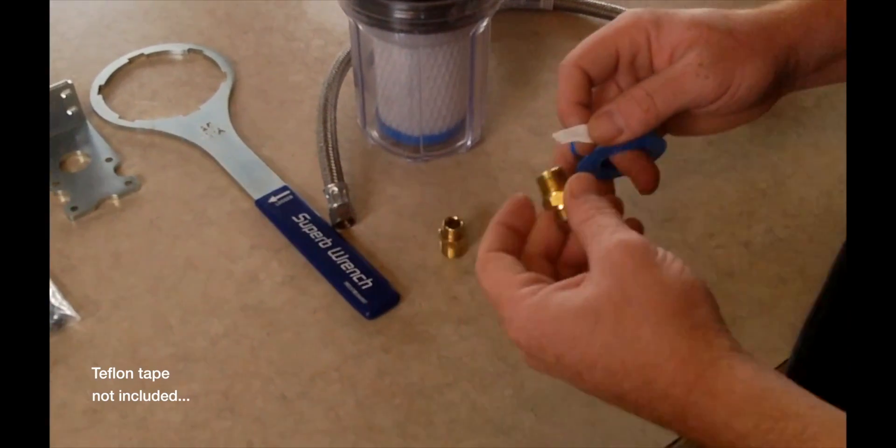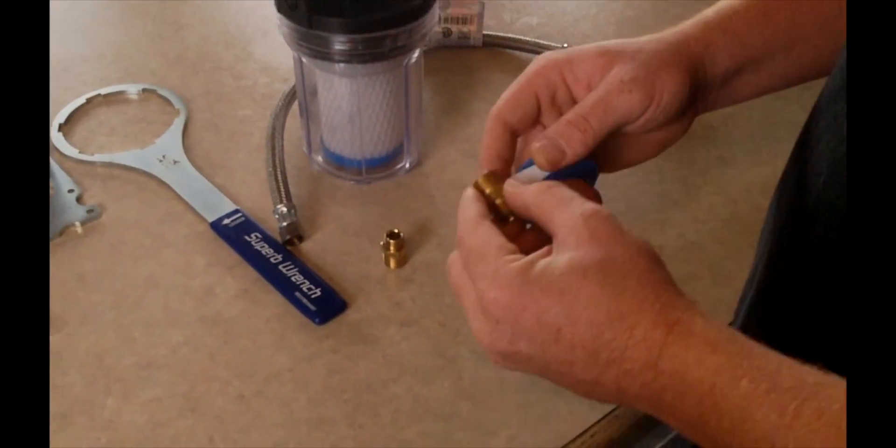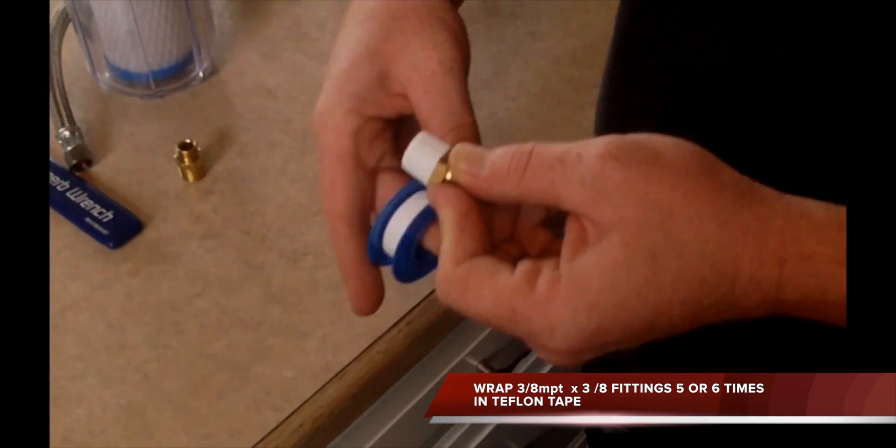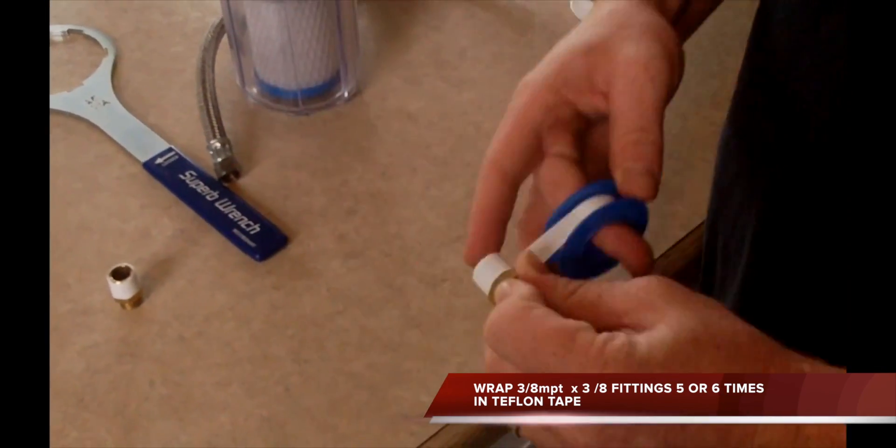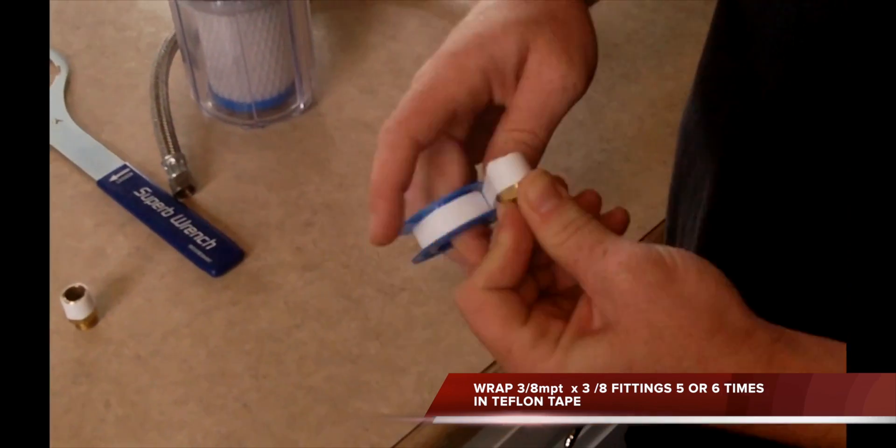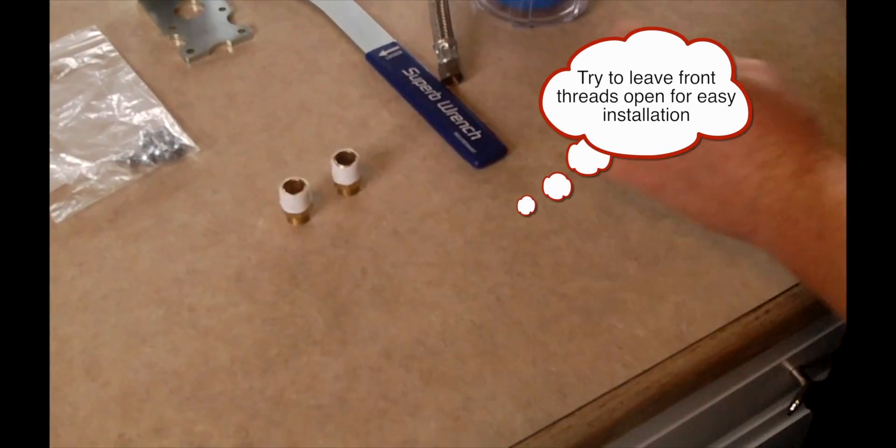To do this, first wrap Teflon tape around the fittings five to six times. Try to leave the front of the threads open for easier installation.